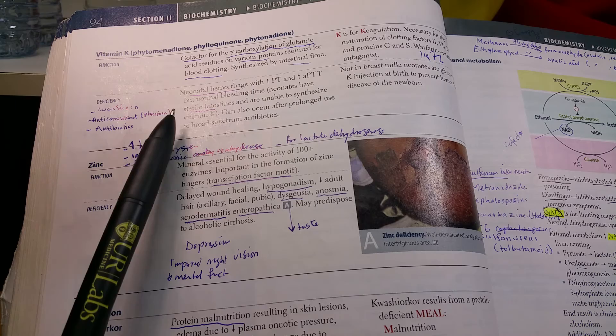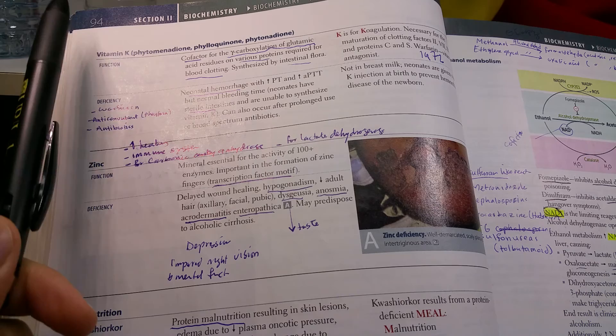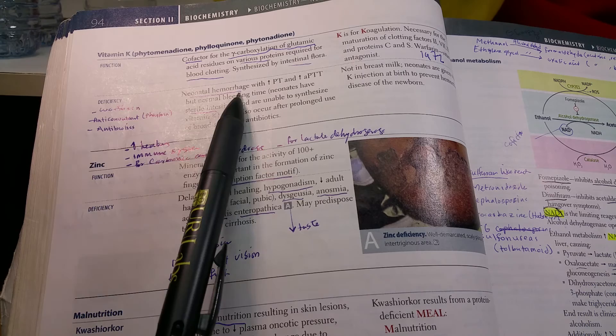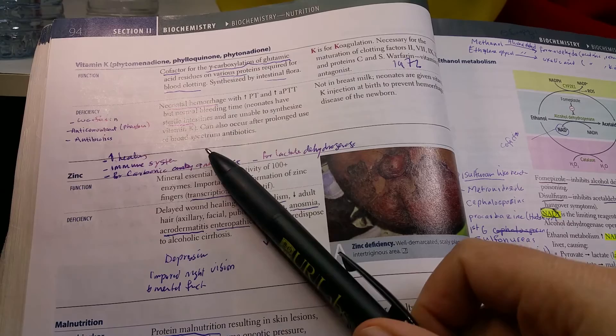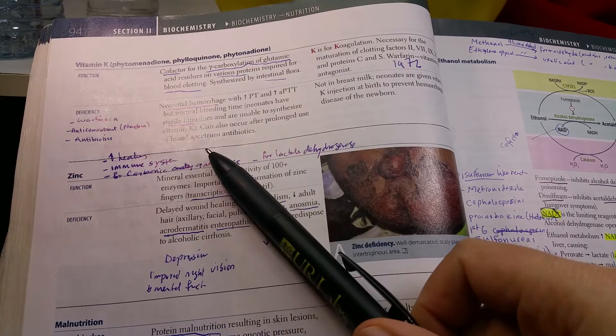The deficiency in neonates occurs because they have sterile intestines, as vitamin K is synthesized in the intestine. That's why we give them vitamin K when they're born. It decreases PT and PTT. It can also occur with prolonged use of broad-spectrum antibiotics, but neonatal hemorrhage is a very classical example.